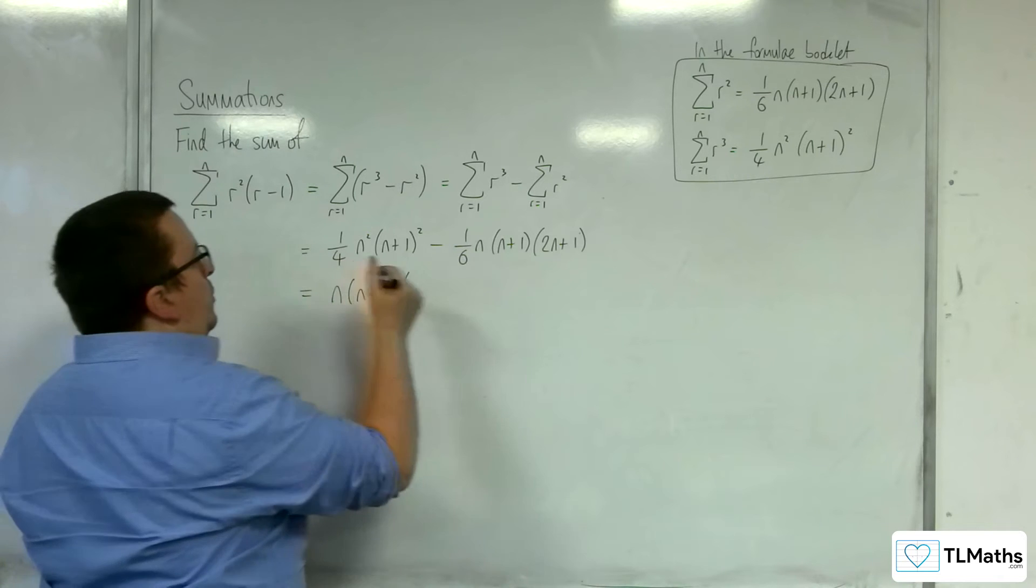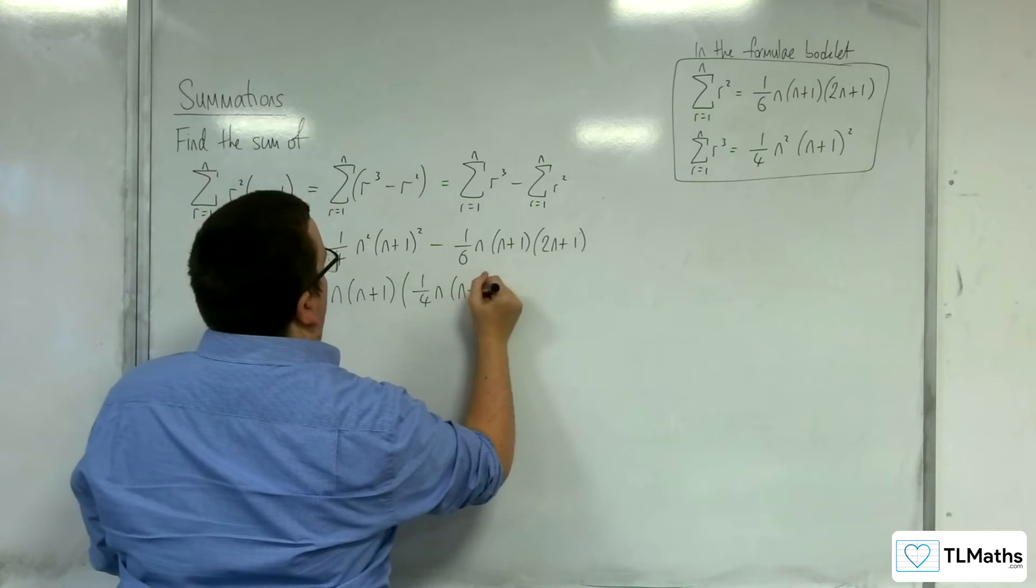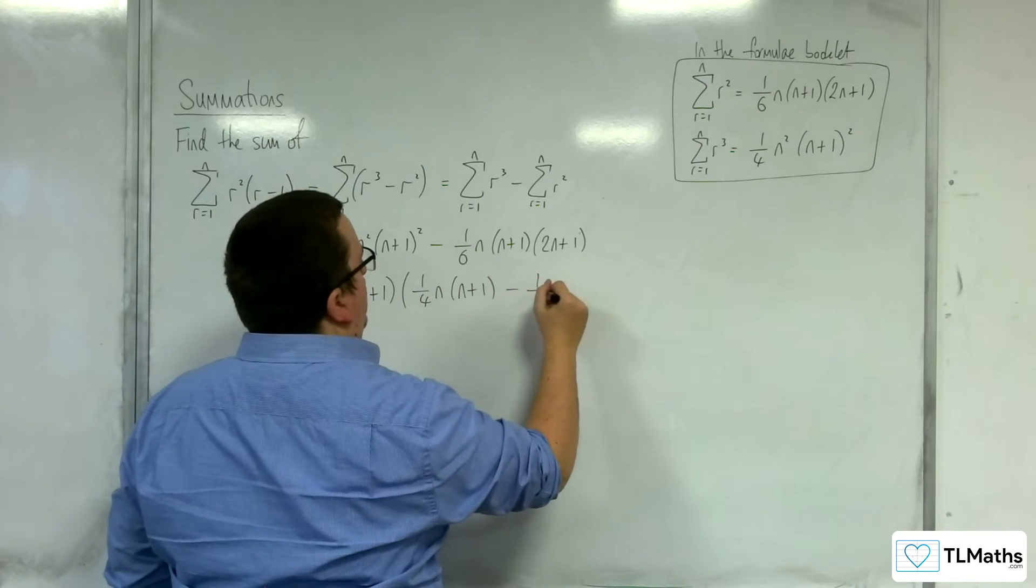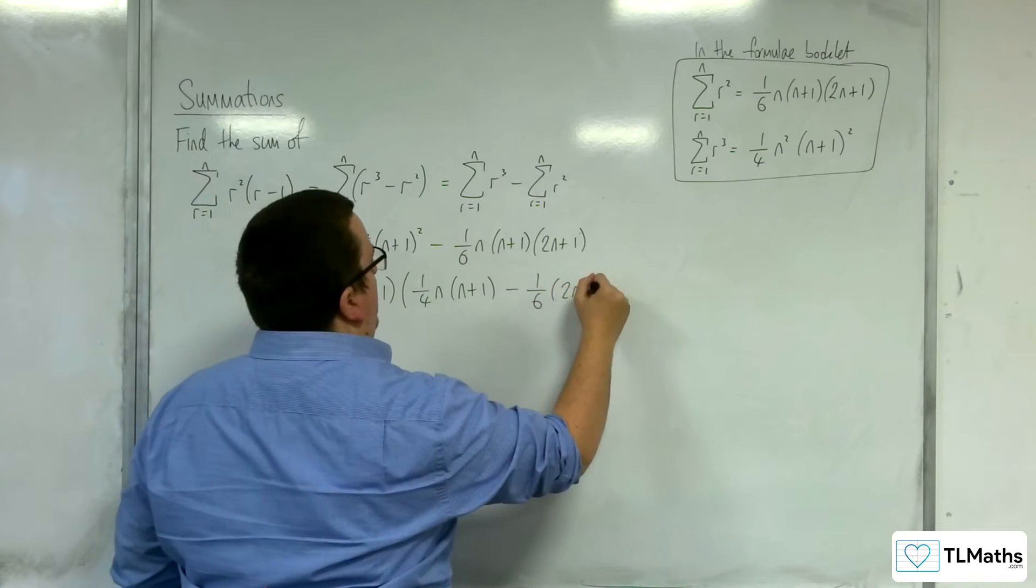So, we're going to have the quarter. We've got 1n left and an n plus 1. And then from here, we've got the minus 1 sixth, 2n plus 1.